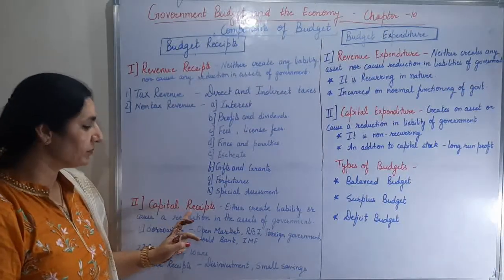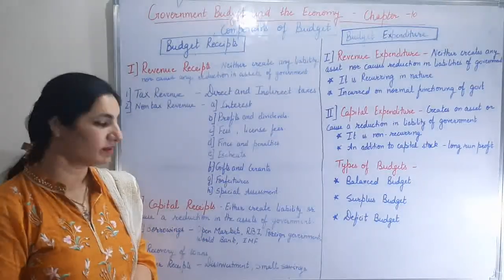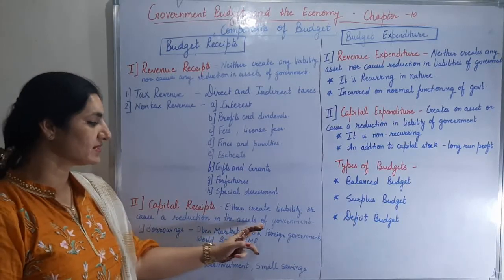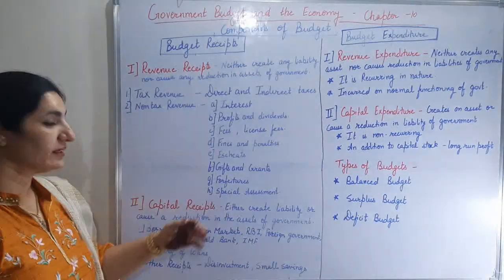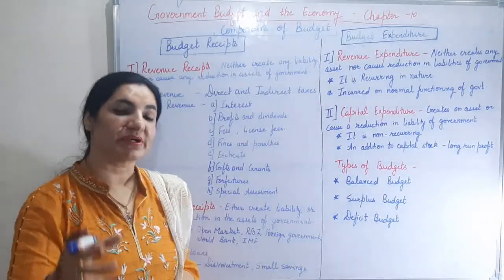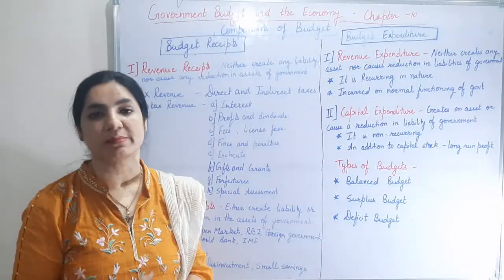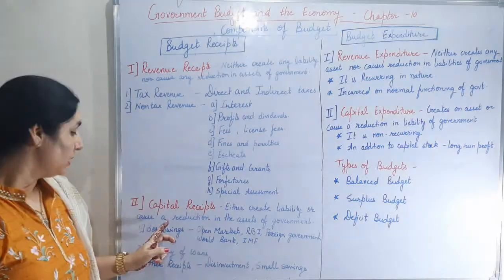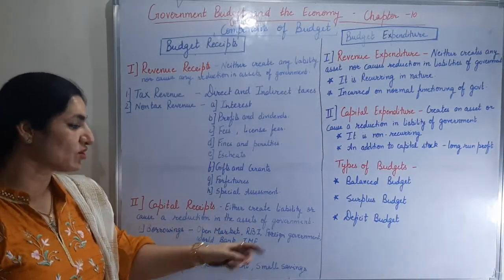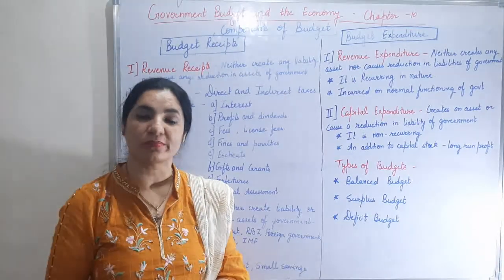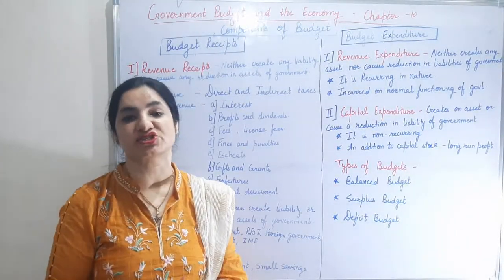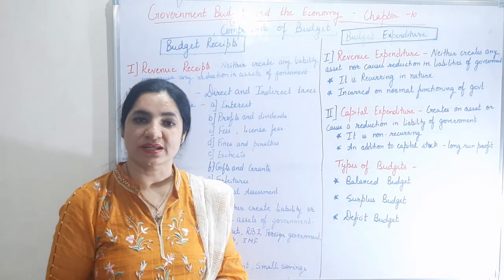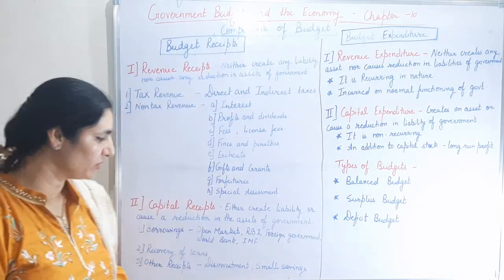Next category is capital receipt. Capital receipts are receipts which either create a liability or cause a reduction in assets of the government. A simple example of a receipt creating liability is a loan taken by the government. An example of reduction in assets is the government selling its shares or securities to the general public.